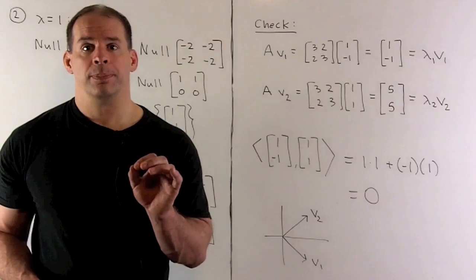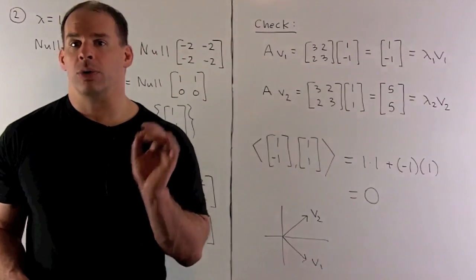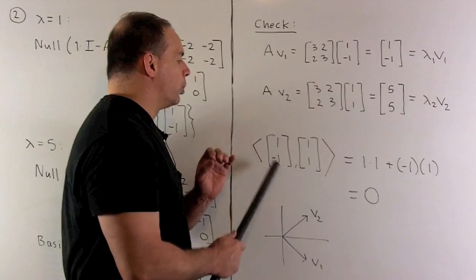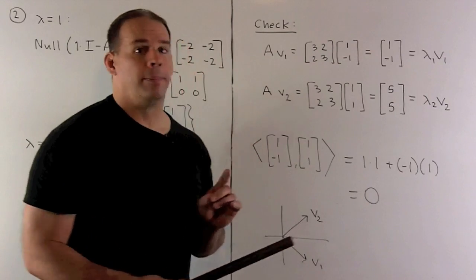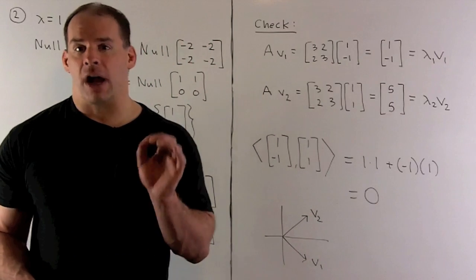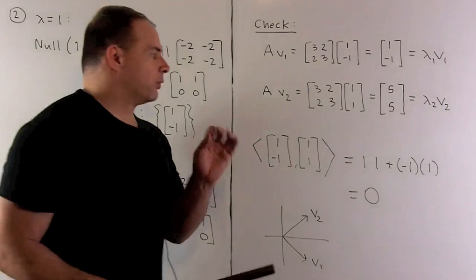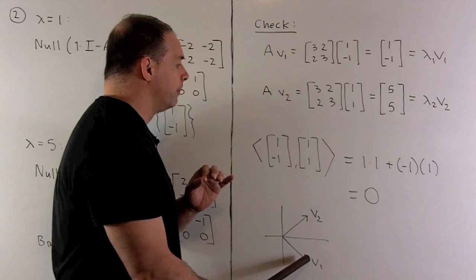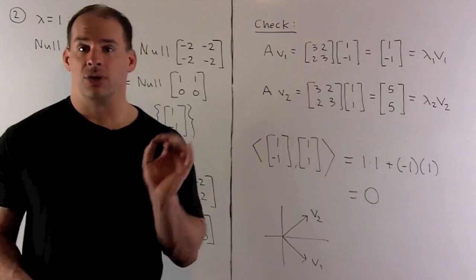Third thing to check: the basis vectors are orthogonal with respect to the usual inner product. Computing the inner product of [1, -1] against [1, 1], we multiply across and sum: we get one minus one, which is zero. So our vectors are orthogonal. Since we're in two dimensions, that means perpendicular. If we draw these vectors, V1 points down along a 45-degree angle, and [1, 1] points up along a 45-degree angle, so the angle between them is 90 degrees — definitely perpendicular.